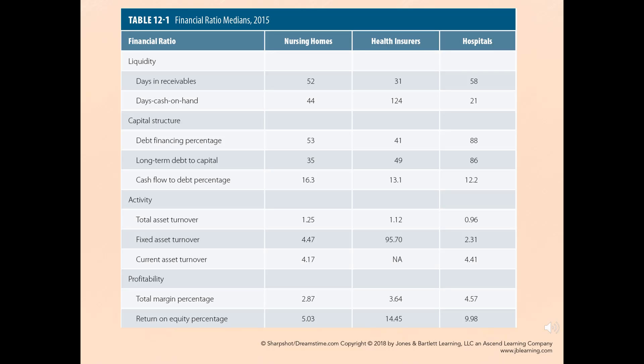Table 12.1 shows financial ratio medians from 2015, showing across the top various types of healthcare entities — nursing homes, health insurers, and hospitals. Here you can see liquidity days in receivables as they vary across each of those components, and you can follow along through the different categories.